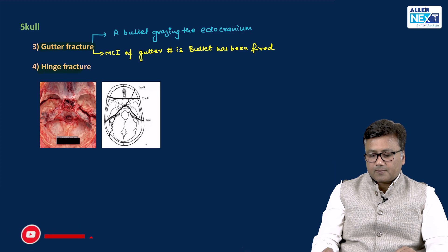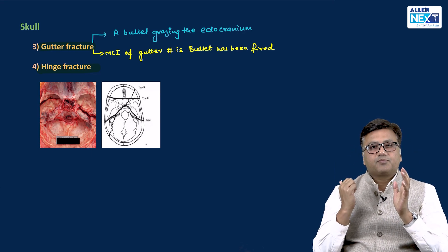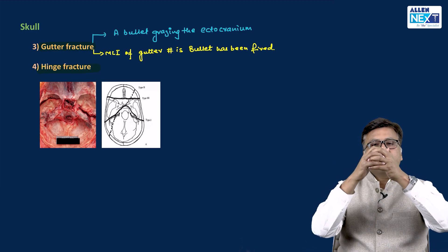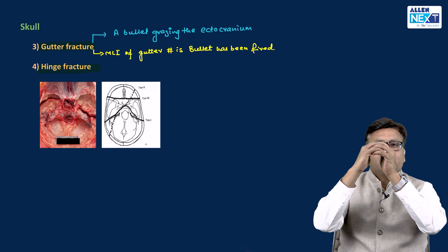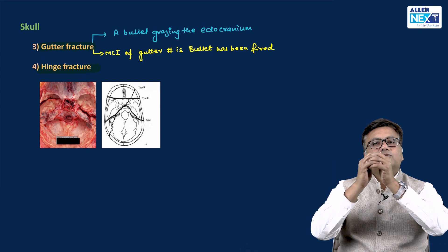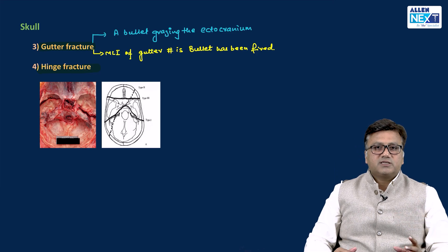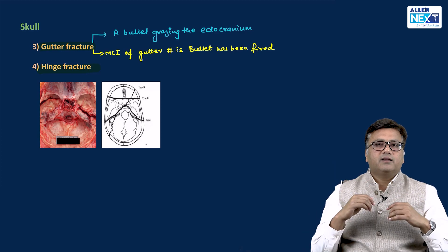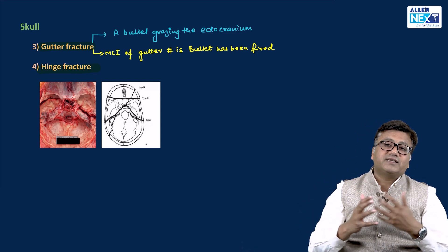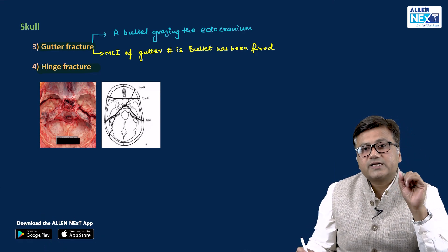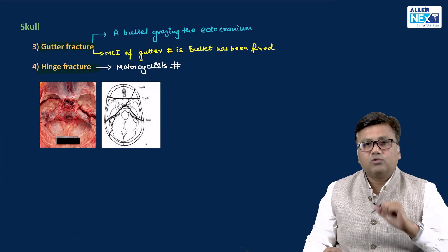The next is hinge fracture. Hinge fracture is a name given to a fracture where the base of the skull is cracked but the vault of the skull is intact. The vault is intact but the base is cracked, so there is an anterior and a posterior portion of the skull connected through the intact vault, causing the skull to hinge — that is called a hinge fracture. This fracture is commonly seen in two-wheeler riders who wear helmets and meet with a road traffic accident. Because of the protective gear on their head, the vault is protected but the base gets cracked. That is why these fractures are also called motorcyclist fractures.